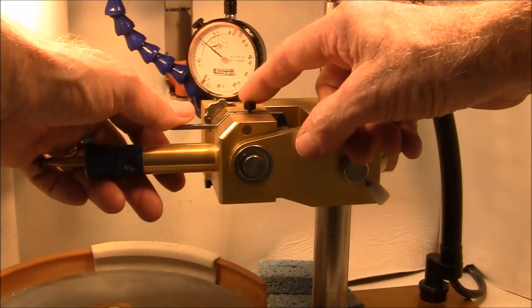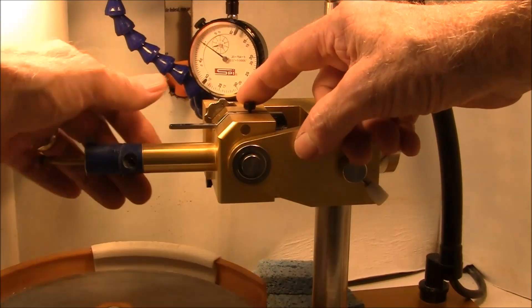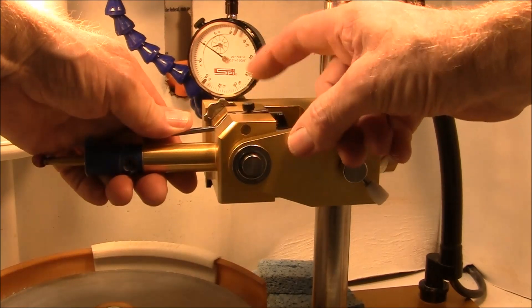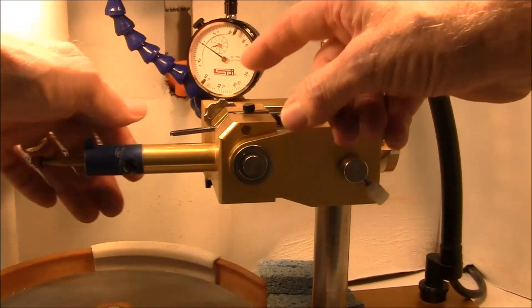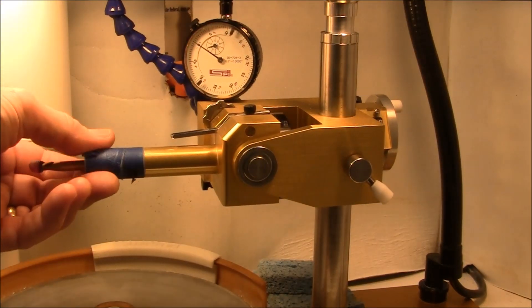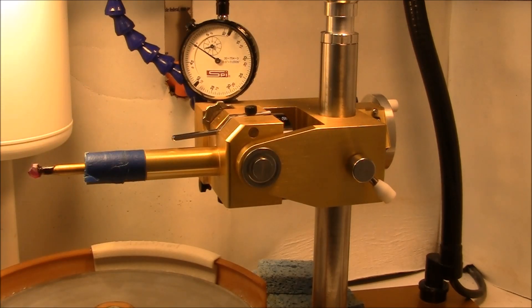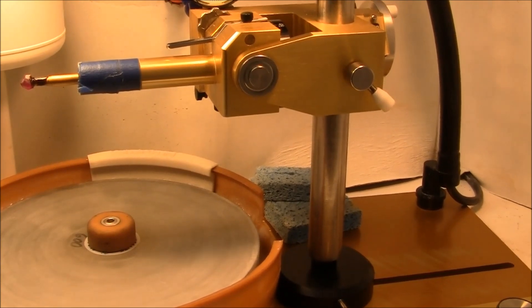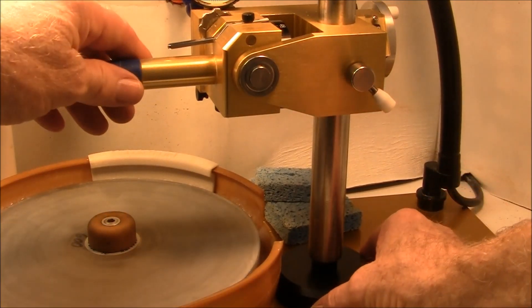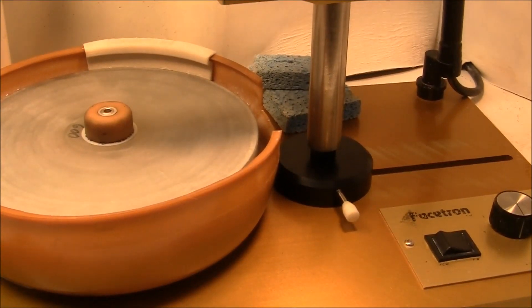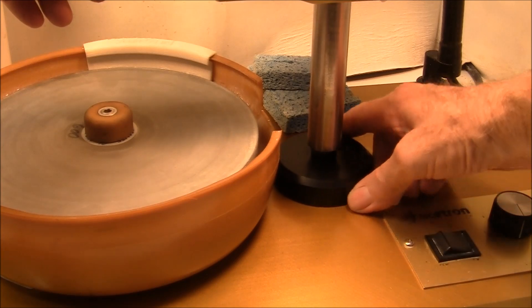Now we'll set the dopped stone to freewheel by pressing the lever and turning this thumb screw down. Now the stone can freely turn. Now we have to move the whole thing back. So what I do is release this lever.